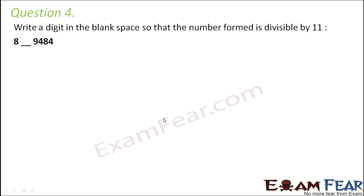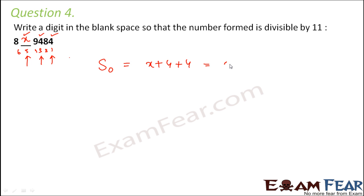Question number 4: Write a digit in the blank space so that the number formed is divisible by 11. Let us assume that the digit in the blank space is x. As per the rule of divisibility by 11, a number is divisible by 11 only when the difference between the sum of digits at odd places and the sum of digits at even places is either 0 or a multiple of 11. Let us find the positions of the digits: positions 1, 2, 3, 4, 5, and 6. The sum of digits at odd positions would be x, 4, and 4 — that is x plus 4 plus 4, equal to x plus 8.